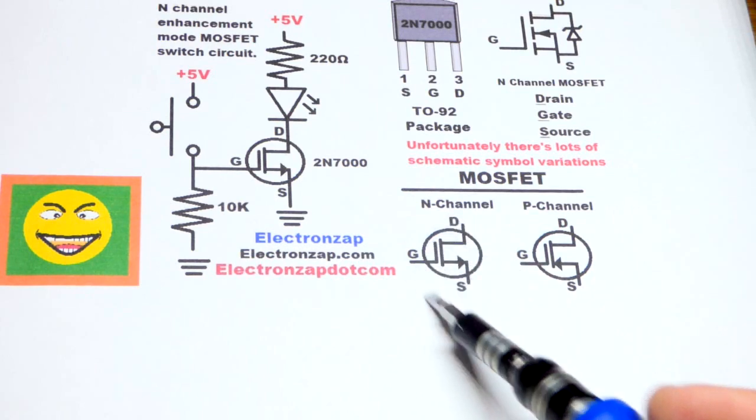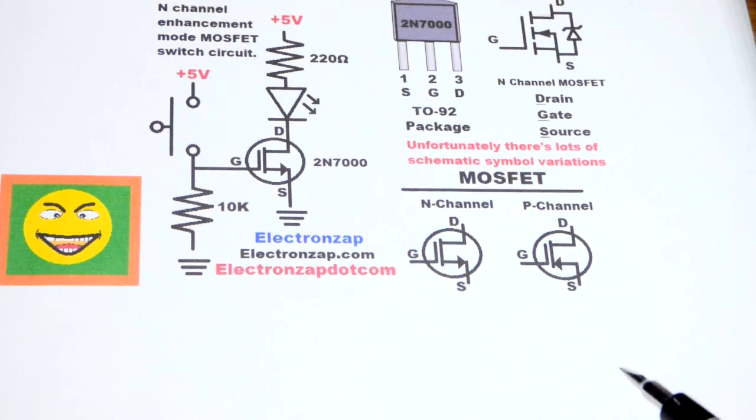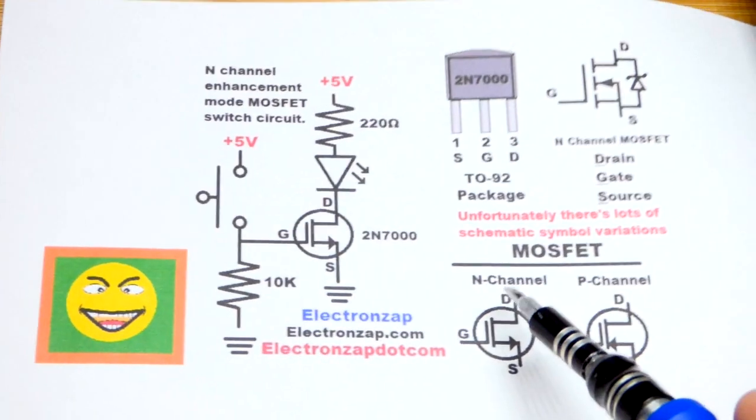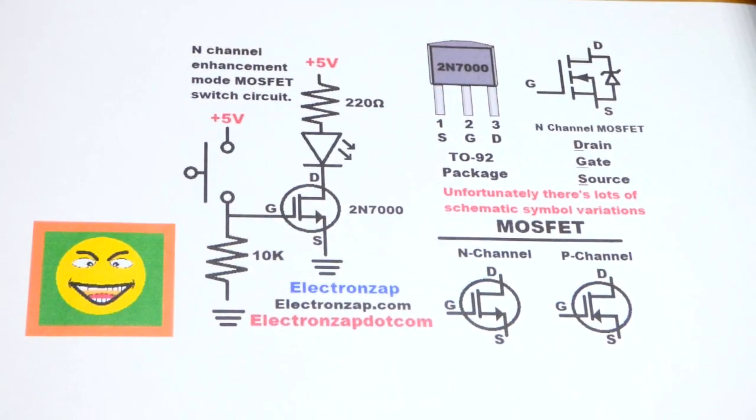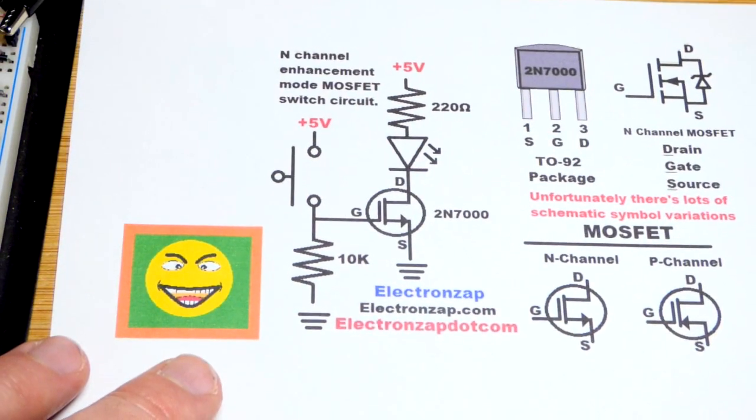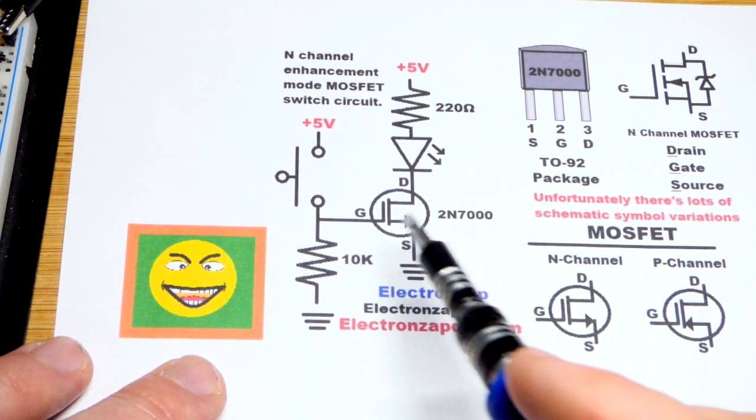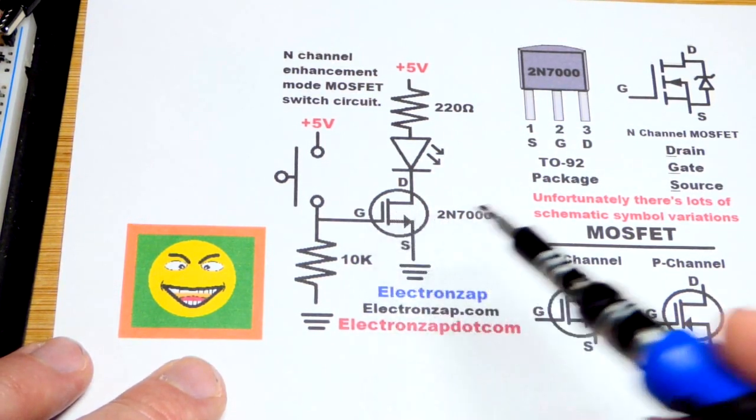So this is the one that I like for n-channel, and that's the one I like for p-channel. Those are the ones I'll be using, but you may see that on the schematic. So this is a switch, and it's very similar to the NPN bipolar junction transistor, except we don't have to worry about gain at all.